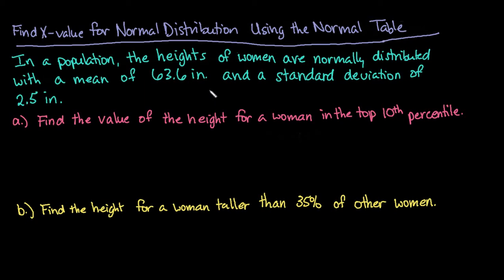So what we will be using to find this is our x value can be found by taking the mean and adding the z-score times the standard deviation. So you do need to find your mean, in this case our mean would be 63.6 and our standard deviation would be 2.5. We're going to use the table to find our z-score.